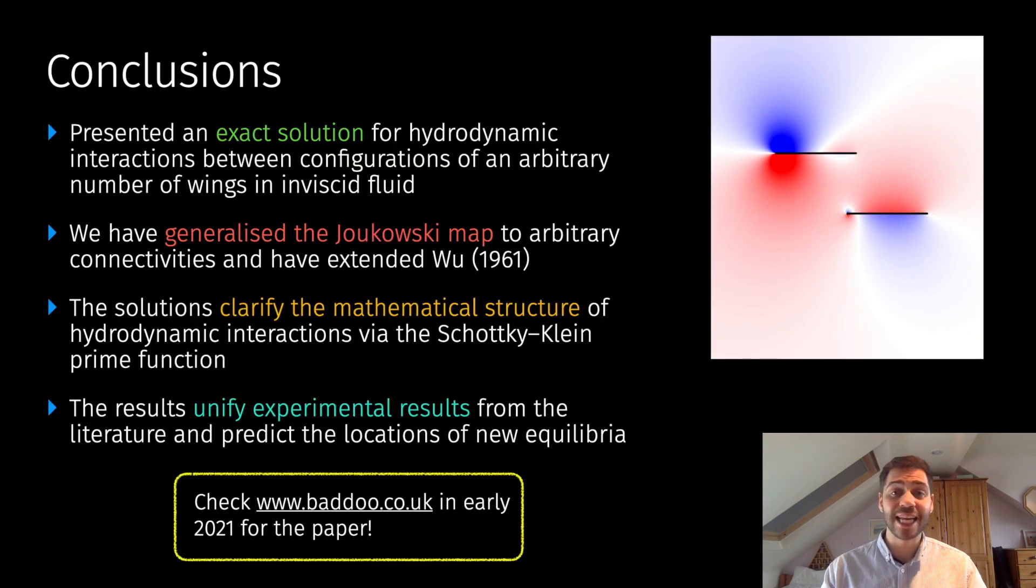To sum up, we presented an exact solution for the hydrodynamic interactions between arbitrary configurations of wings executing arbitrary motions. I've particularly presented computational results in the case where we're doubly connected and there are just two wings in the system. Part of this involved extending the Joukowski map to multiply connected domains, and what's really exciting about these solutions is that they unify experimental results and suggest positions of new equilibria that we hope can be observed in experiments. There will hopefully be a paper available in early 2021. Thank you very much for listening, and I'll be happy to take questions at the appropriate time.